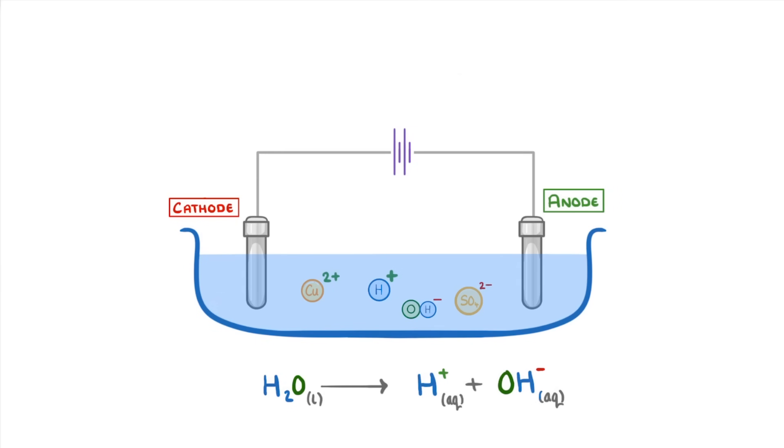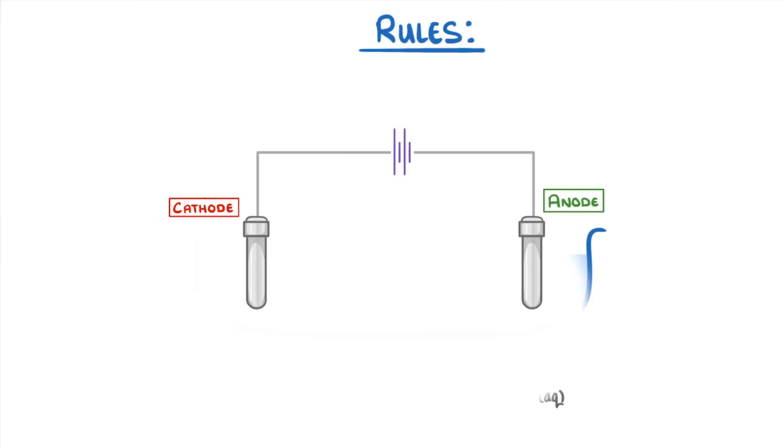To work out which of the ions will react with each electrode, you need to know a couple of basic rules. The cathode, which is negative, will attract the positive ions, so the metal ion from the compound and the hydrogen ion from the water. But importantly, it will only discharge one of these ions. The rule is that the ion of the least reactive element will be the one that gets discharged.